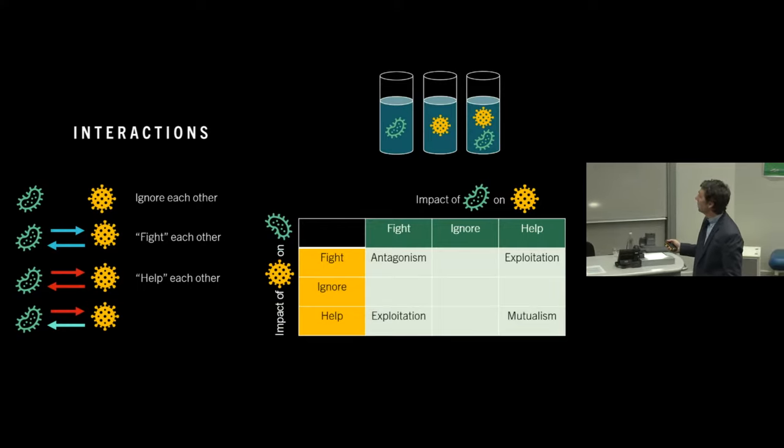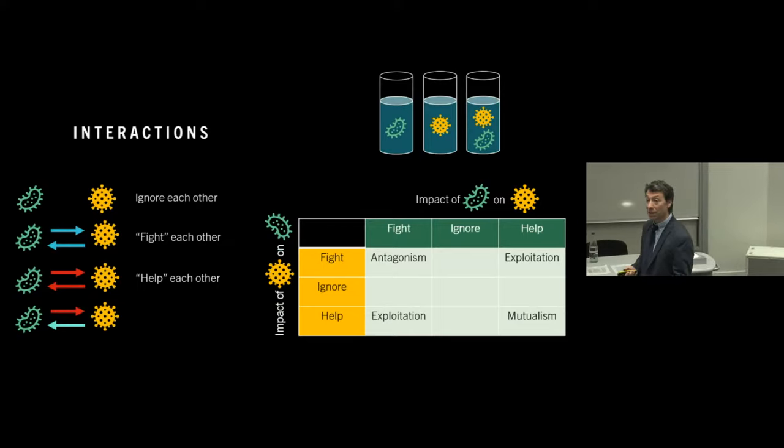So it could be used as a food source and in that way help it to grow. Or it could be some combination of these things. So we can categorize those interactions in this kind of way. So we have here on this, in the rows, the impact of the yellow species on the green. And in the columns, the impact of the green species on the yellow. And we have three different possibilities, fight, ignore, or help. And if they're both fighting together, then we call that an antagonism. If they're both helping each other, then we're calling that a mutualism. If one helps and the other fights, then that would be some form of exploitation. And, of course, we have all the combinations that also have names for them, but I haven't filled in the table.